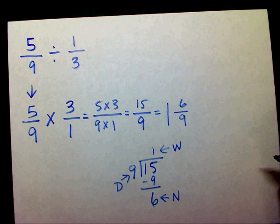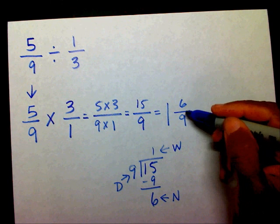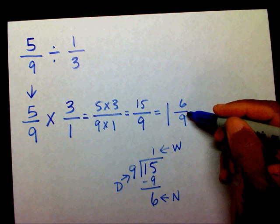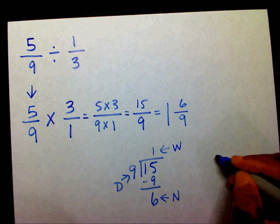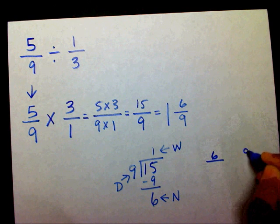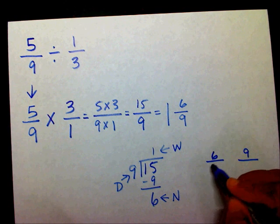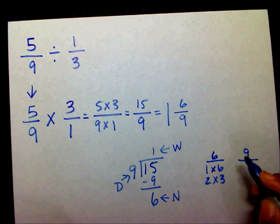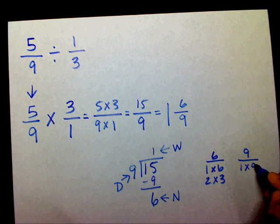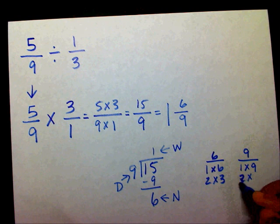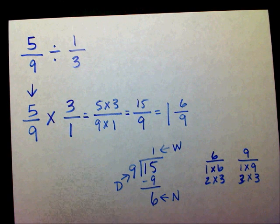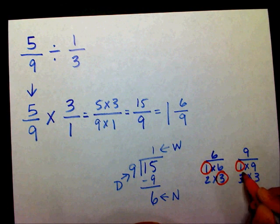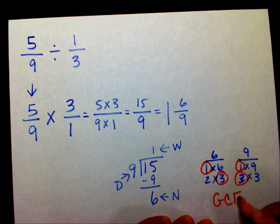I know that six and nine share the number three — they share a factor of three — but I don't know if that's the largest factor they share. So I'm going to write my factors for six and for nine. The factors for six are one times six, and two times three. The factors for nine are one times nine, and three times three. The factors they have in common are one and three, so the greatest common factor is three.